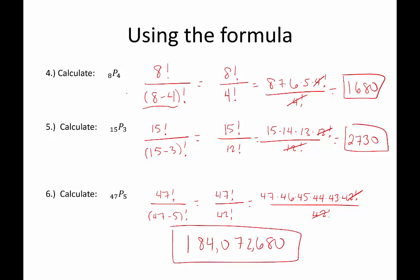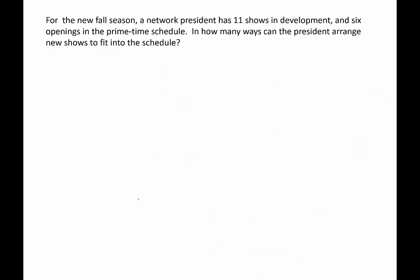With permutations, you always want this R value to be somewhat small. Because if it were 47 permuted 42 ways, you'd have to do 47 times 46 times 45 times 44 times 43 all the way down to 6. That would be a mess.